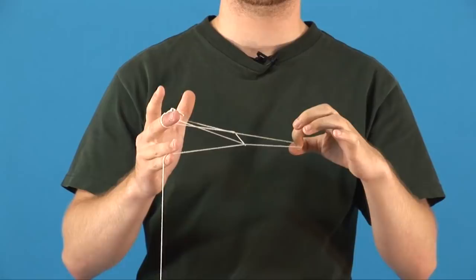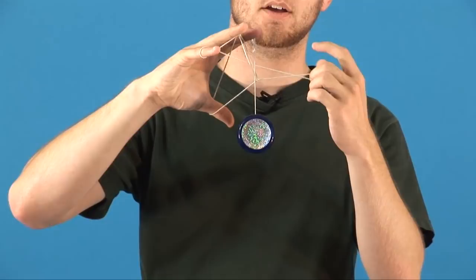From there you're going to turn the Eiffel Tower on its side and take your middle finger and stick it through the center gap and actually pull the yo-yo string through.